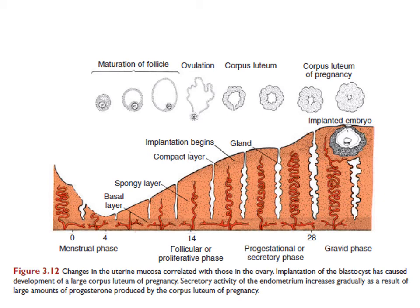The proliferative phase begins at the end of the menstrual phase, is under the influence of estrogen, and coincides with the growth of the ovarian follicles — as the follicles grow, so does the endometrial lining. The secretory phase begins approximately two to three days after ovulation because it is under the influence of progesterone produced by the corpus luteum. If fertilization does not occur, there will be shedding of the upper layers of the endometrium, marking the beginning of the menstrual phase.